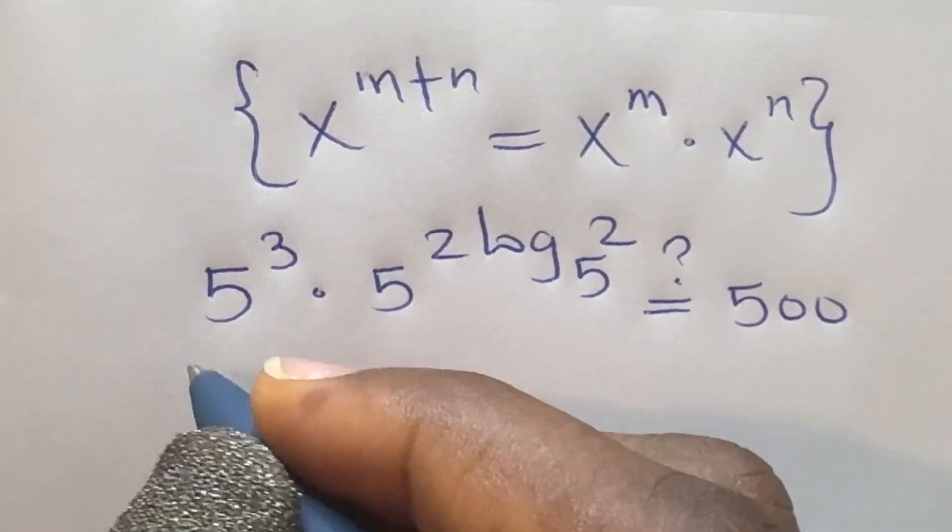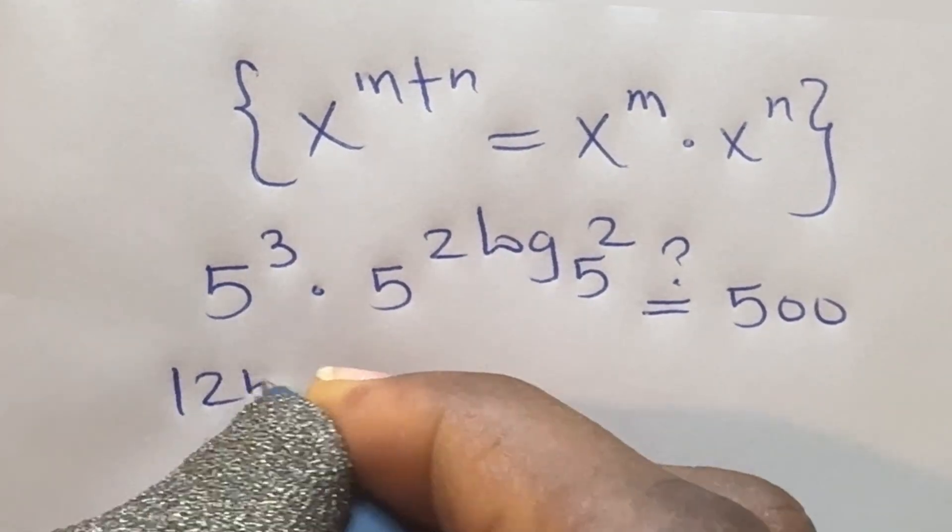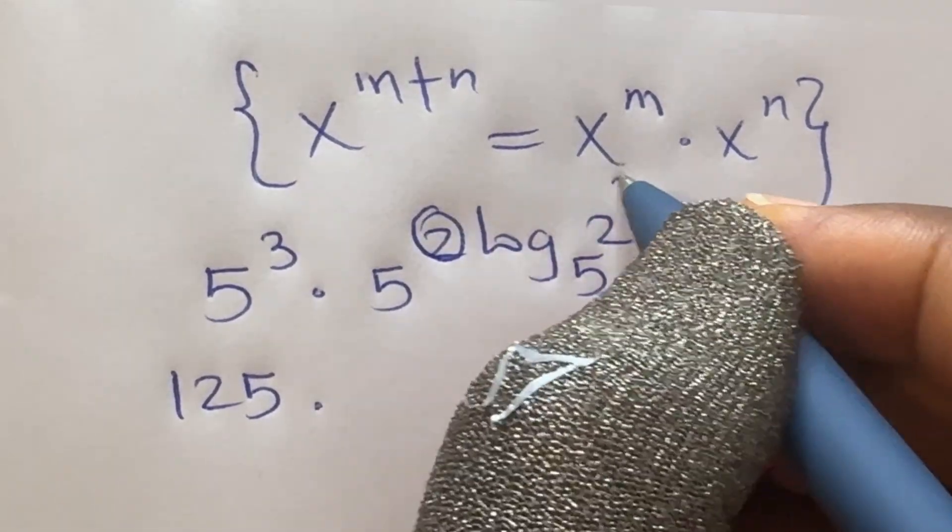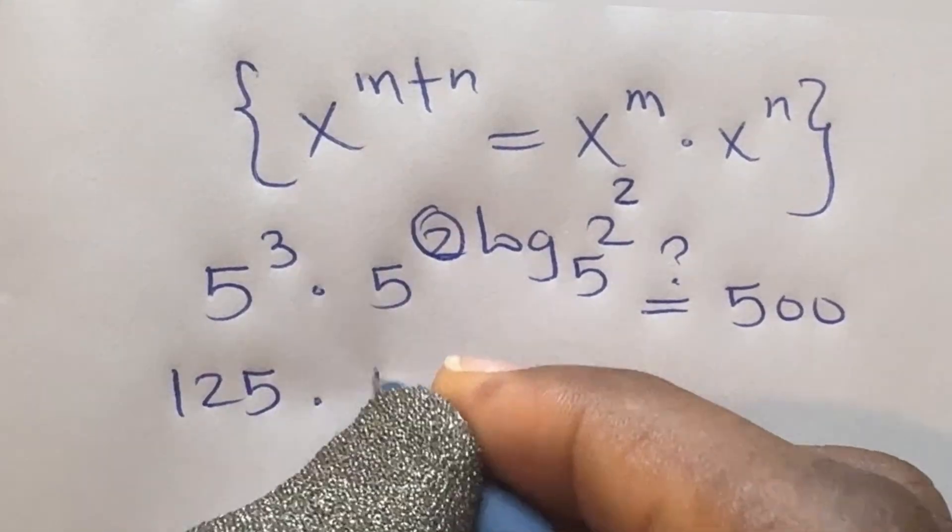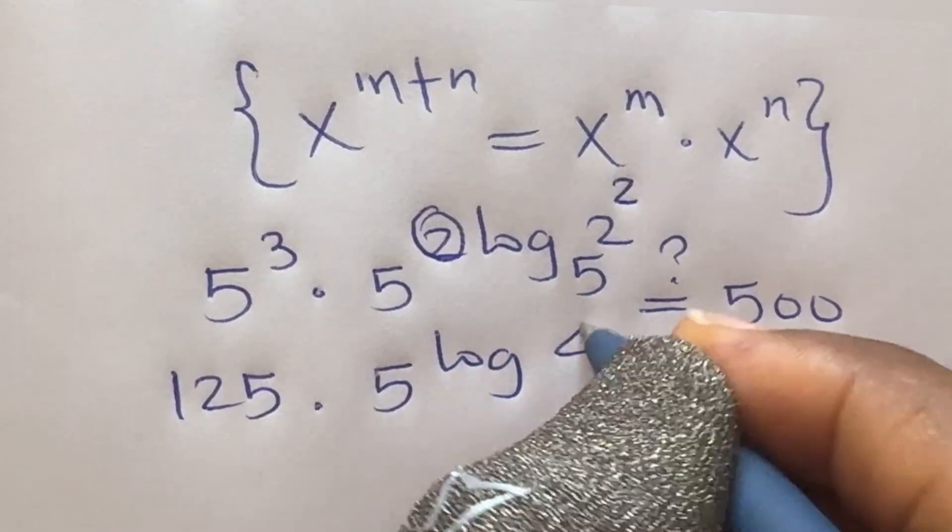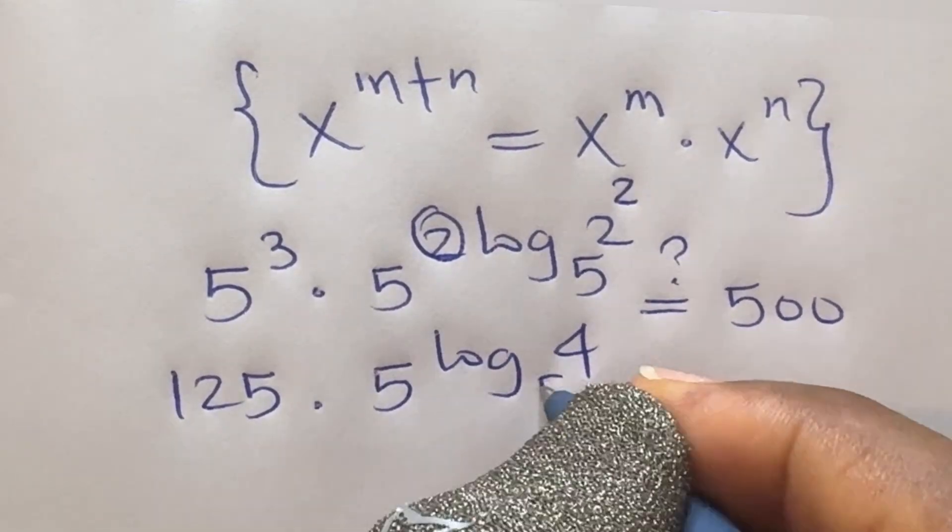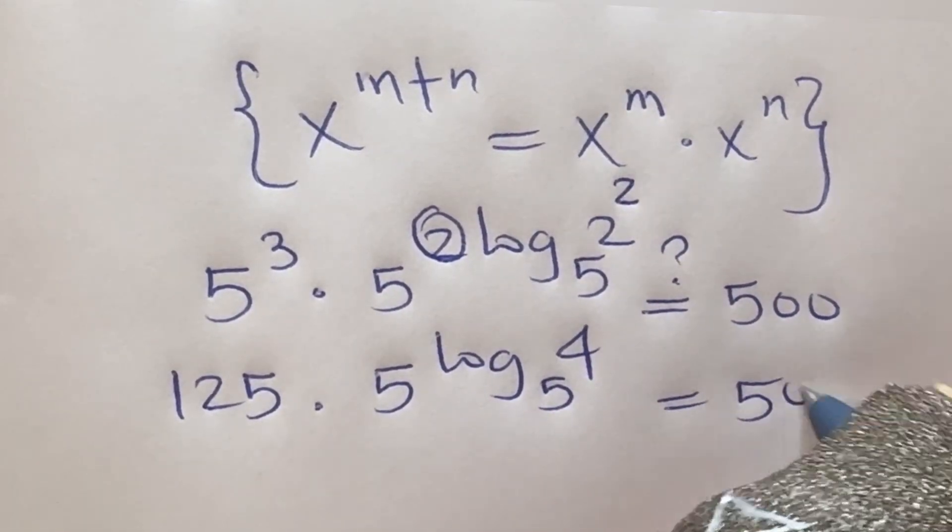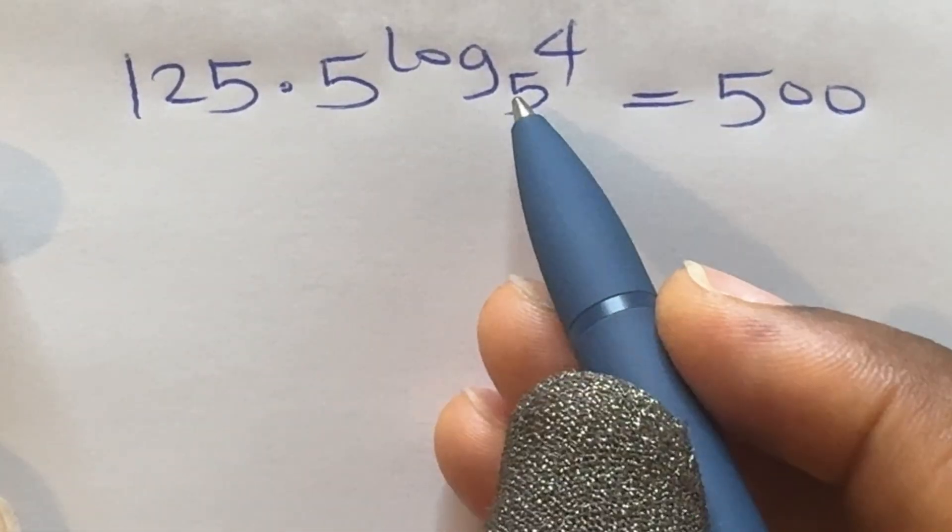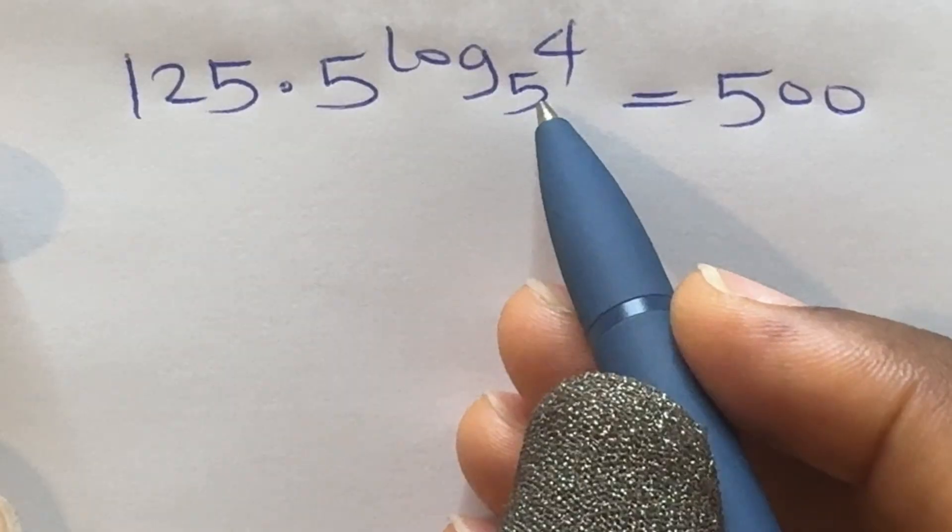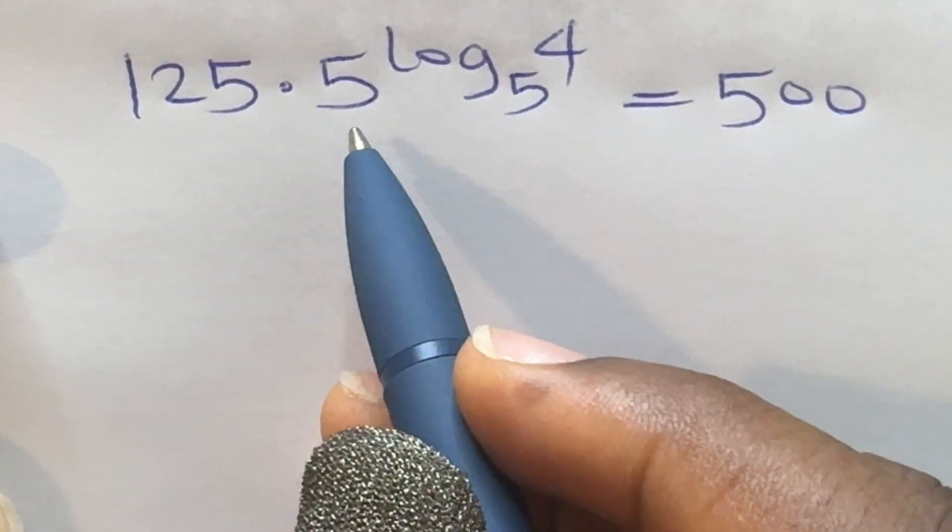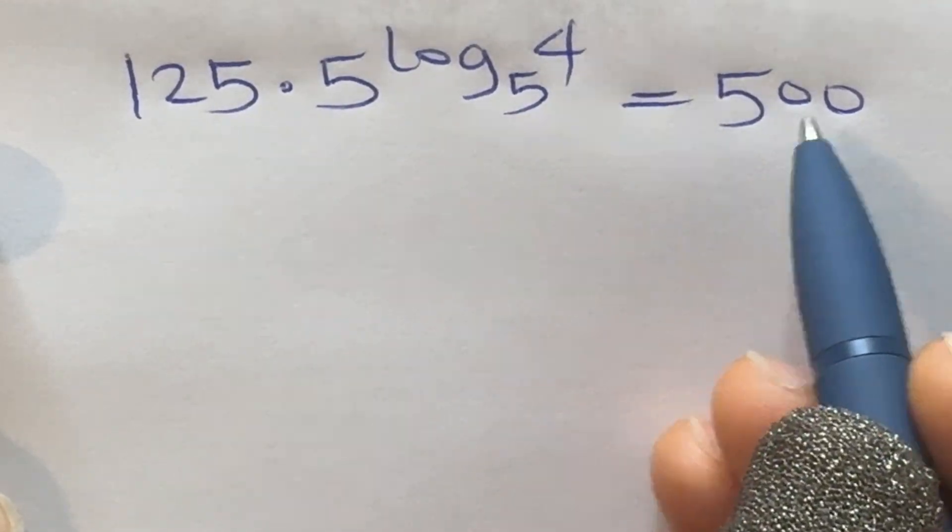5 raised to power 3 is 125, so we have 125 times, I'm going to put this 2 over here by logarithm. So I have 5 raised to power log 2 raised to power 2, which is 4, base 5, equals 500. So we have 125 times 5 raised to power log 4 base 5 is equal to 500.